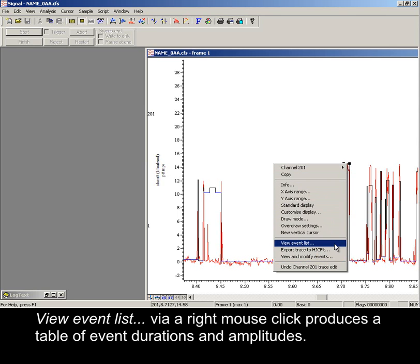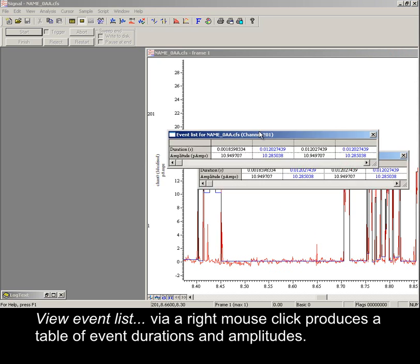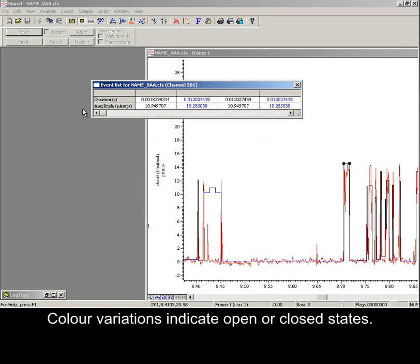View event list via a right-mouse click produces a table of event durations and amplitudes. Color variations indicate opened or closed state.